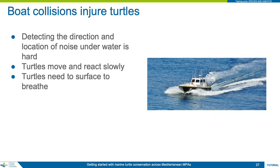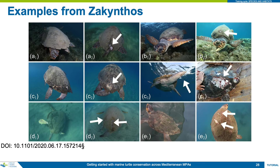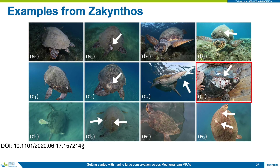Turtles need to surface to breathe and cannot just hide away on the sea floor to avoid boats, and at this surfacing time they are most vulnerable. The combination of these factors means that a mix of sea turtles and fast boats, especially in shallow waters, will result in injury and death for some turtles. Examples of turtle injuries caused by boat impacts from Zakynthos in 2018 and 2019, published in Animal Conservation in 2021, show that relatively minor damage was caused to some turtles, but one turtle had a history of collisions that eventually led to its death, and also had fishing line protruding from its cloaca.